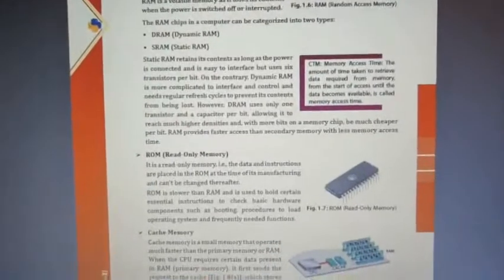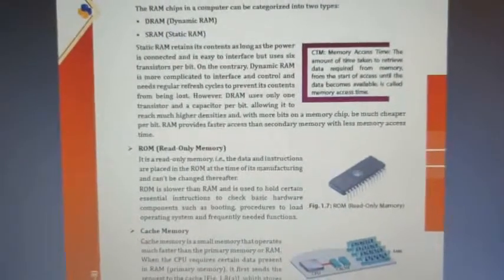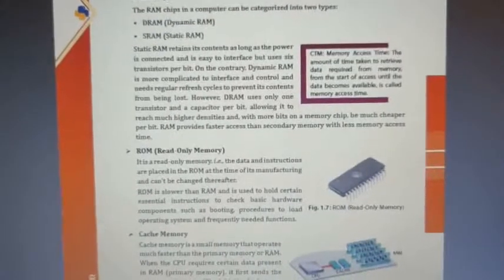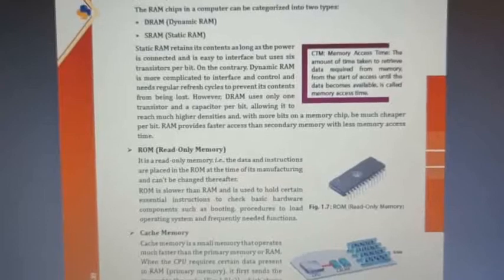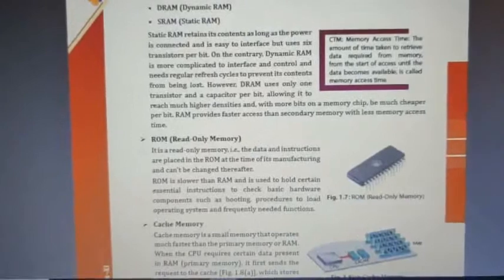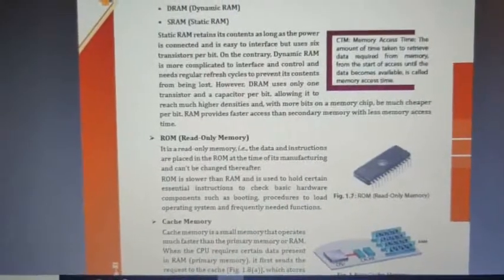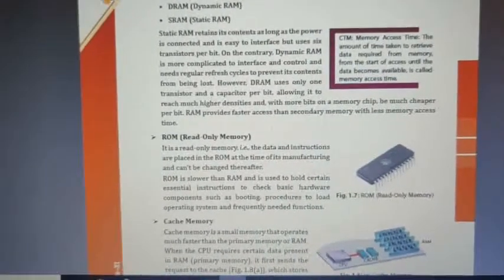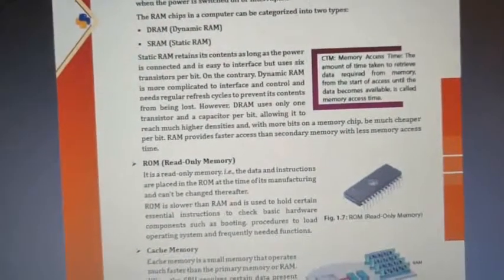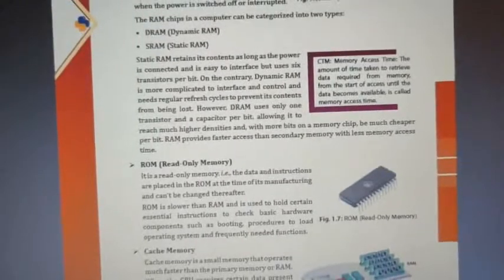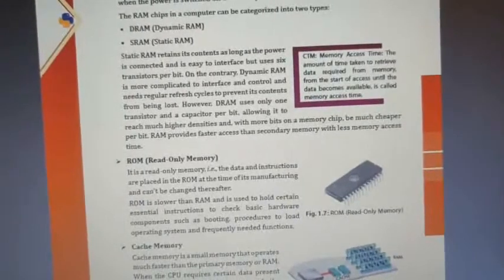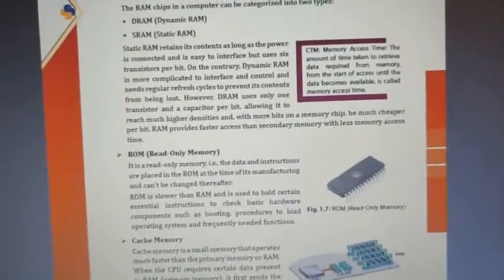Next we talk about ROM. ROM stands for Read Only Memory. It is a readable memory only — the data and instructions are placed in the ROM at the time of its manufacturing and cannot be changed. For example, on your phone you have RAM and you have ROM. ROM is your internal memory in which all the applications and data are stored and you cannot rewrite or delete that particular memory.